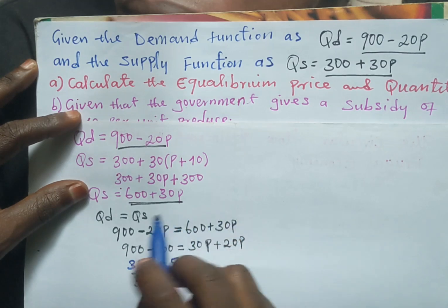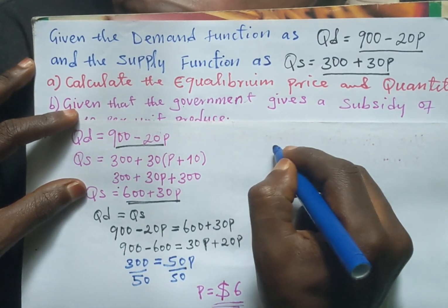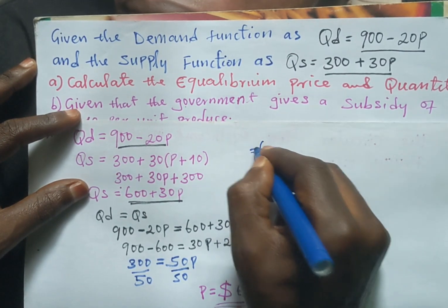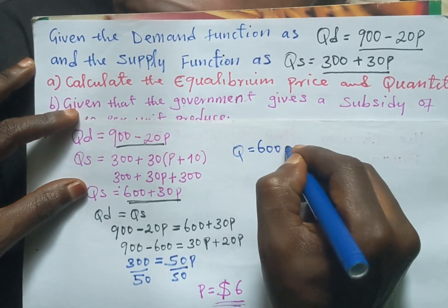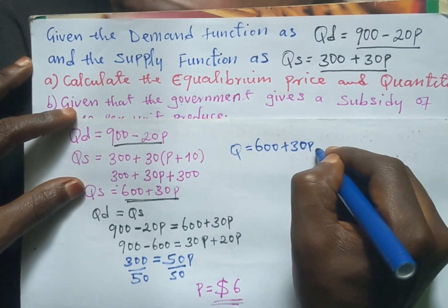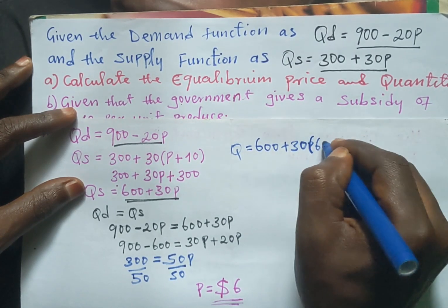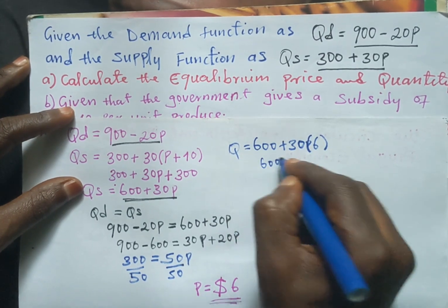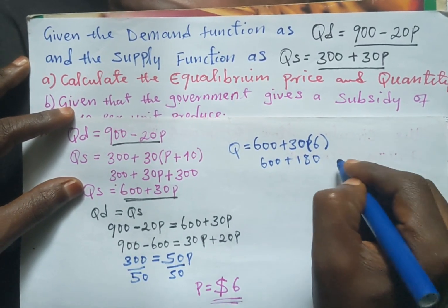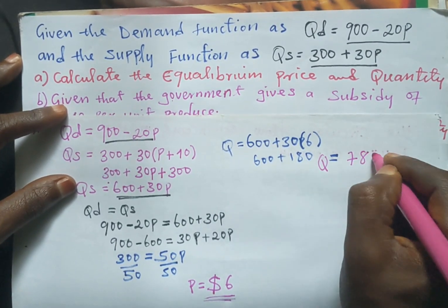Now we can substitute the new equilibrium price into the supply function to find the new equilibrium quantity. Using the new supply function: Q = 600 + 30P, and our P is 6. So Q = 600 + 30 × 6 = 600 + 180. Our new equilibrium quantity is therefore equal to 780 units.